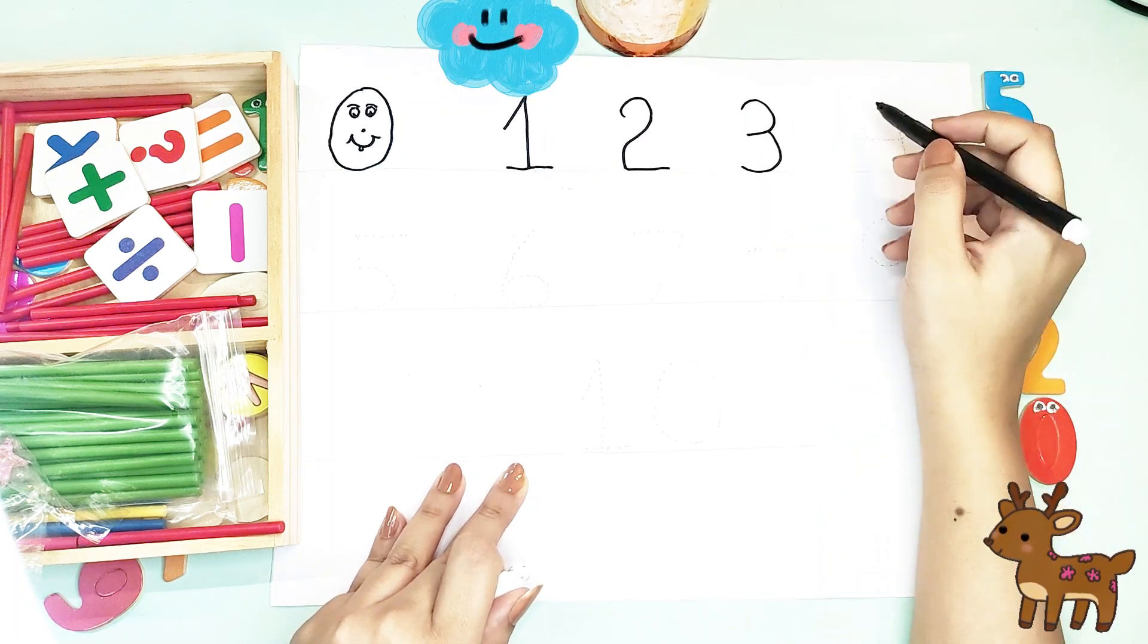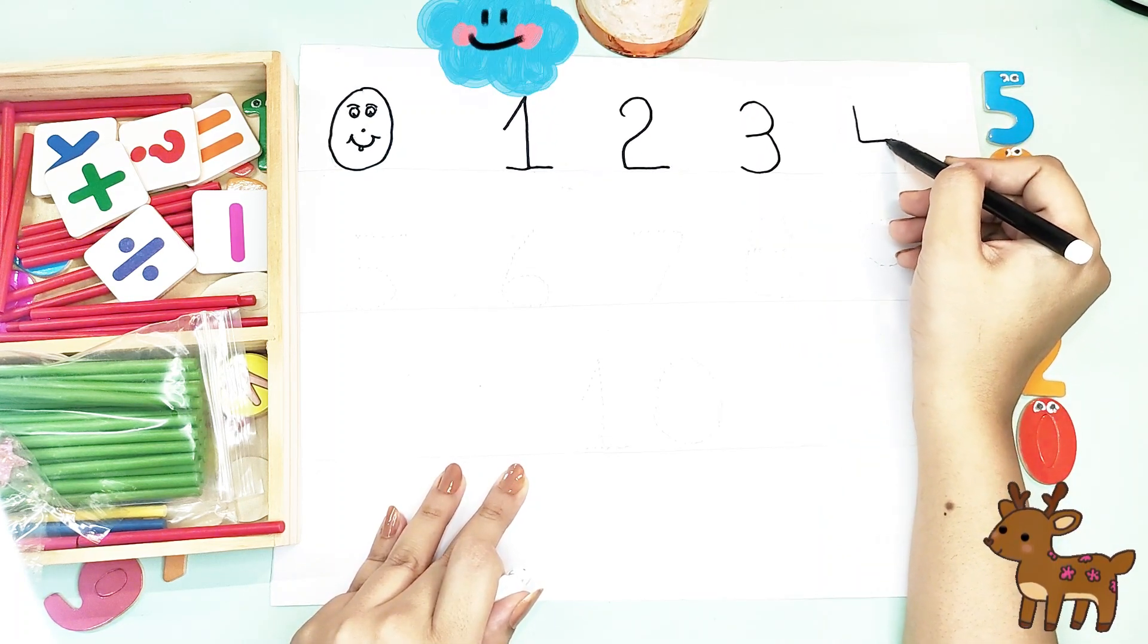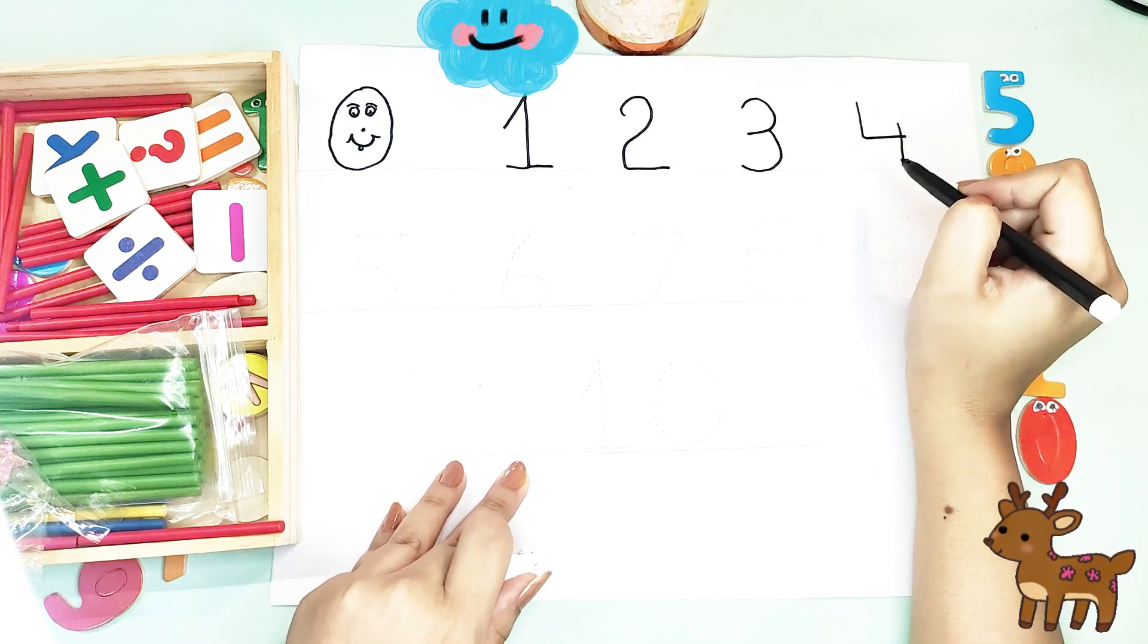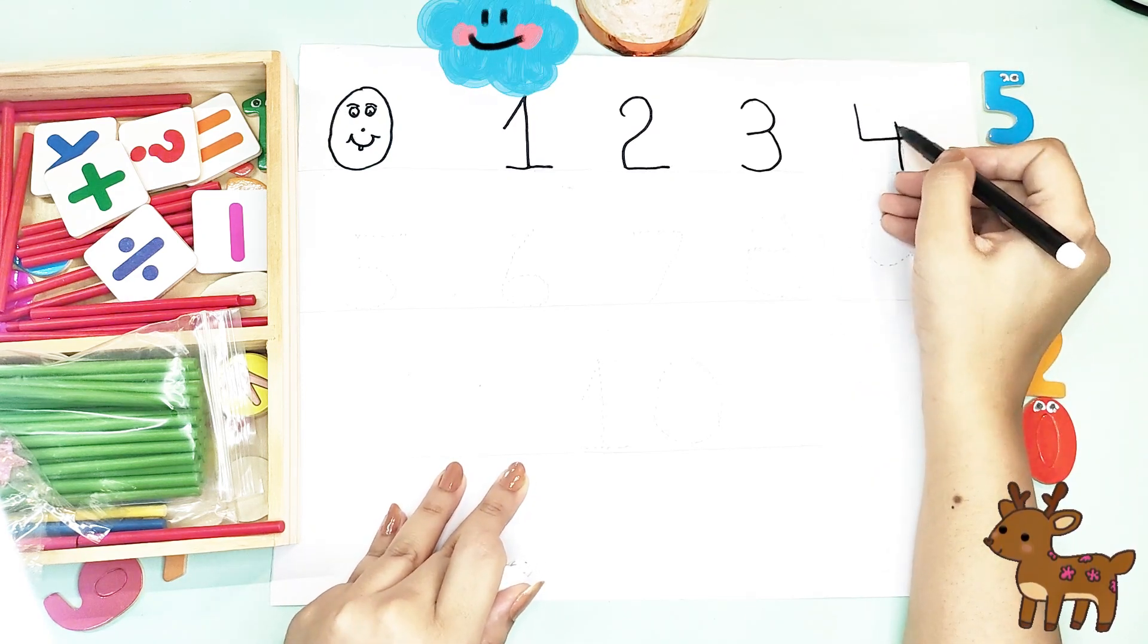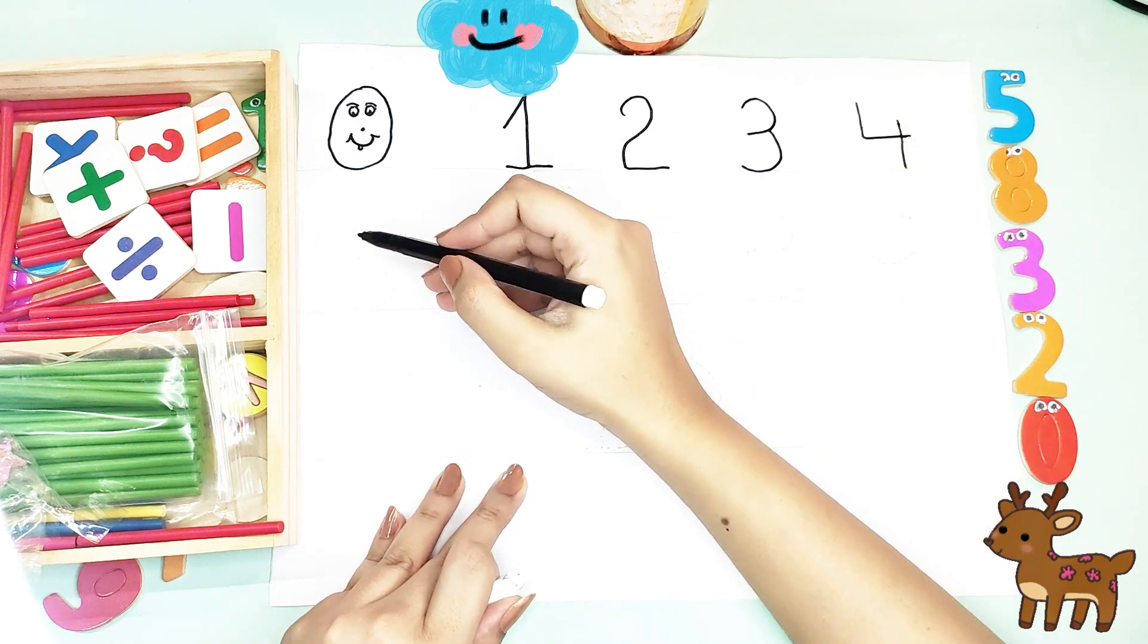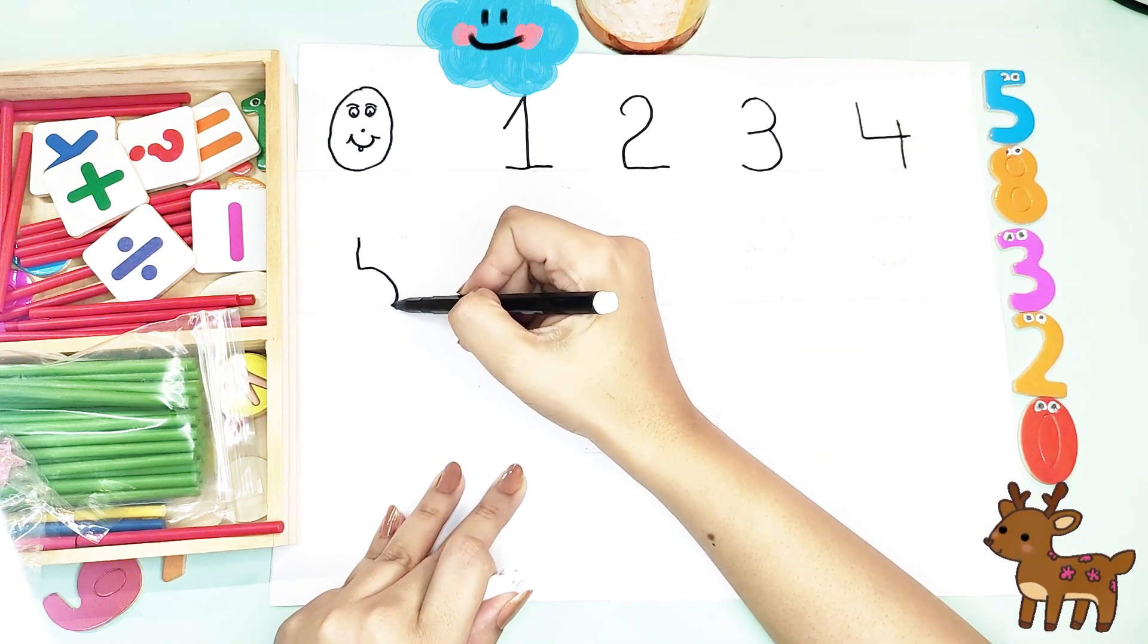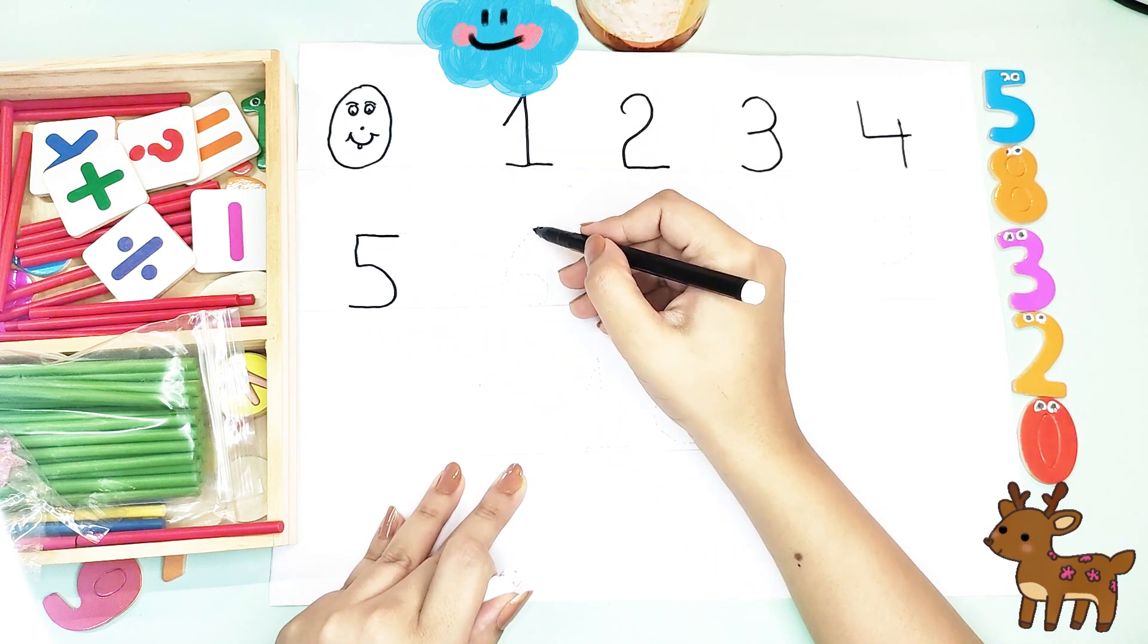Three. Number three is easy, right? Four. This is number five.